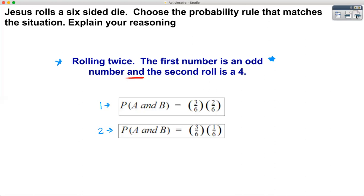Because of that, the probability of these two events A and B is going to be two fractions multiplied together. Event A is the first part: the probability that the first number is an odd number. There are three odd numbers on a six-sided die — one, three, and five — so P(A) = 3/6. Event B is the probability that the second roll is a four. There's only one four, so P(B) = 1/6. Because this says 'and', we multiply, giving us choice two.